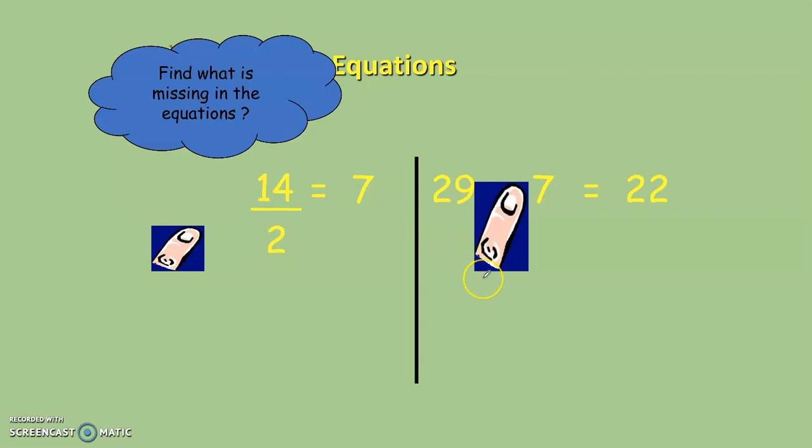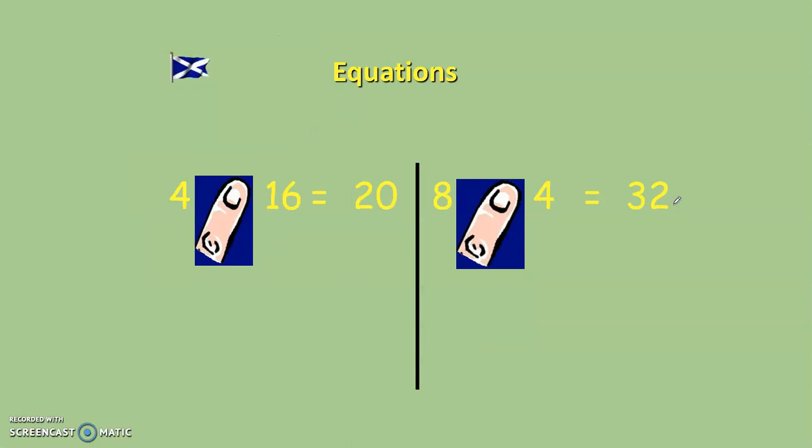On to this next example here. 29 and 7 and then 22. What do I need to put in here? Add, subtract, times or divide. How do I go from 29 using 7 to get to 22? Would I add the 7? Would I take it away? Would I multiply by it or divide by it? I would take it away. 29 take away 7 is equal to 22.